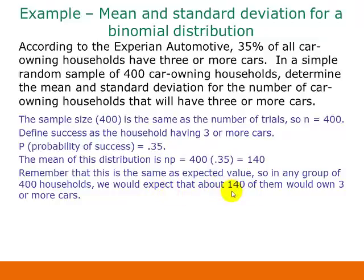Now, that's a little bit misleading, because if we picked out several different samples of 400 households, that doesn't mean any of them would have exactly 140 successes. The expected value is really talking about the long run. A more accurate interpretation would be: if we selected 1,000 different samples of 400 households and looked at the number of successes in each, the average number of successes we would expect to be 140.